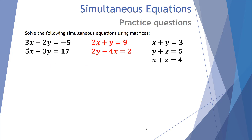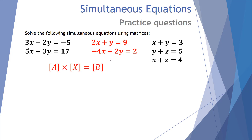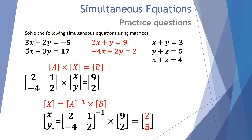Let's have a go at number 2. Pause now and try. The abnormality here is that our numbers aren't aligned — our x's and y's are in different positions, which can catch people out. We can't have them in the wrong spots when writing into a matrix. So we rearrange: put the minus 4x at the front and the plus 2y at the back. Now our x's and y's are lined up and we can proceed. Setting up the matrix: 2, 1, minus 4, 2 for the coefficients, unknown x and y, and totals 9 and 2. Using the inverse of A times B, we get x equals 2 and y equals 5.